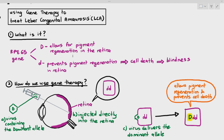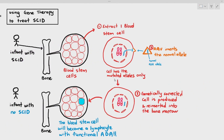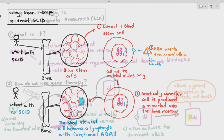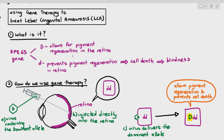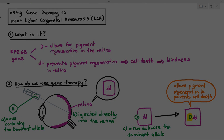In summary, gene therapy involves either removing a cell, correcting it, and reinserting it into the body, or directly injecting the allele with a vector into the affected tissues. The ethics of gene therapy and genetic screening will be covered in the next video.